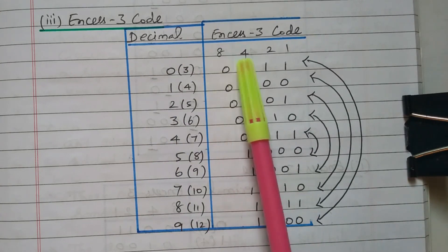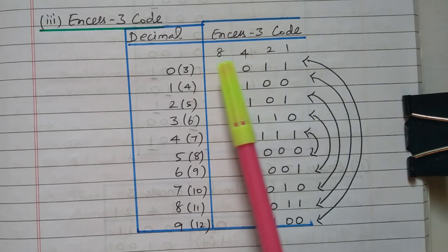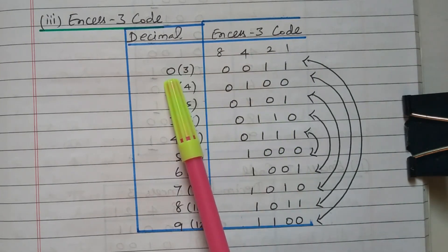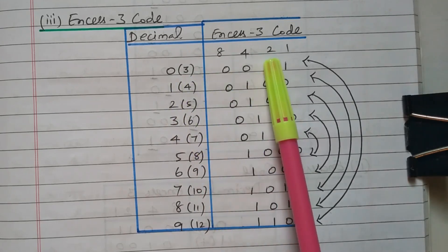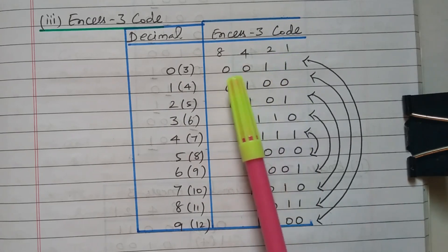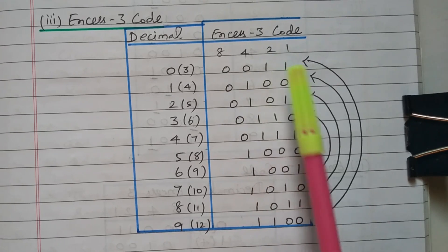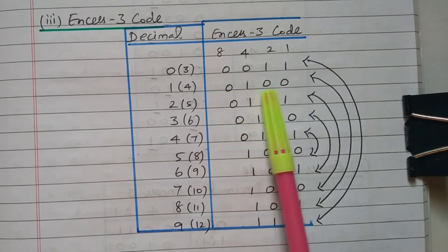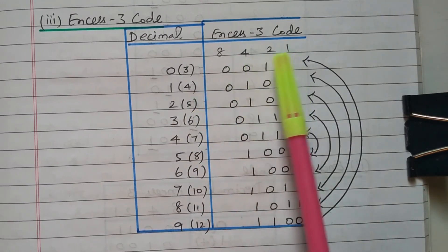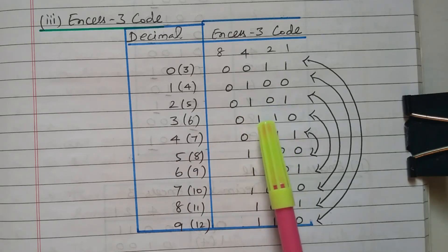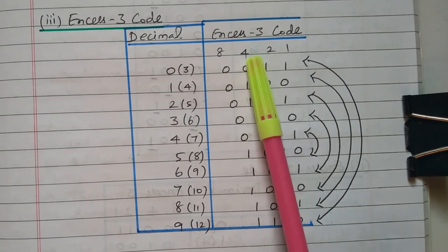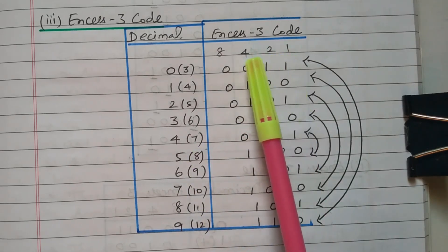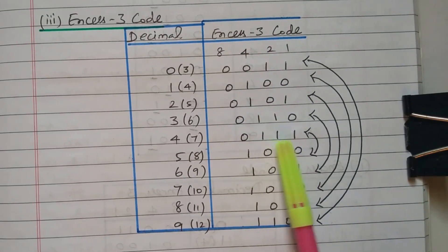XS3 code uses the weight 8,4,2,1 — first position is 8, second position is 4, third position is 2, last position is 1. For decimal 0 (XS3 value 3), the third and fourth positions are 1: two plus one is three — code is 0,0,1,1. For decimal 1 (XS3 value 4), the second position alone is 1 — code is 0,1,0,0. For decimal 2 (XS3 value 5), the second and last positions: four plus one is five — code is 0,1,0,1. For decimal 4 (XS3 value 7), second, third, and fourth positions: four plus two plus one is seven — code is 0,1,1,1.